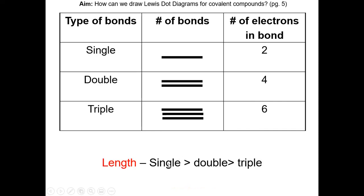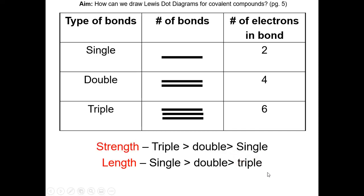A single bond is much longer than a double bond, and a double bond is much longer than a triple bond. There is an inverse relationship between the length and the strength of a bond — so the triple bond is much stronger than a double bond, and a double bond is much stronger than a single bond.